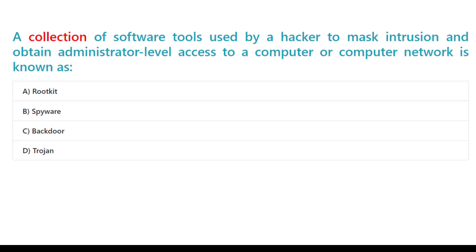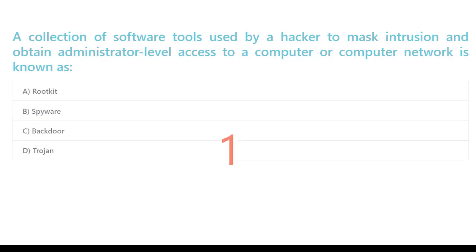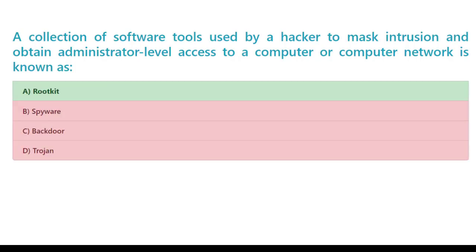A collection of software tools used by a hacker to mask intrusion and obtain administrator-level access to a computer or computer network is known as: A. Rootkit. B. Spyware. C. Backdoor. D. Trojan. The correct answer is A. Rootkit.